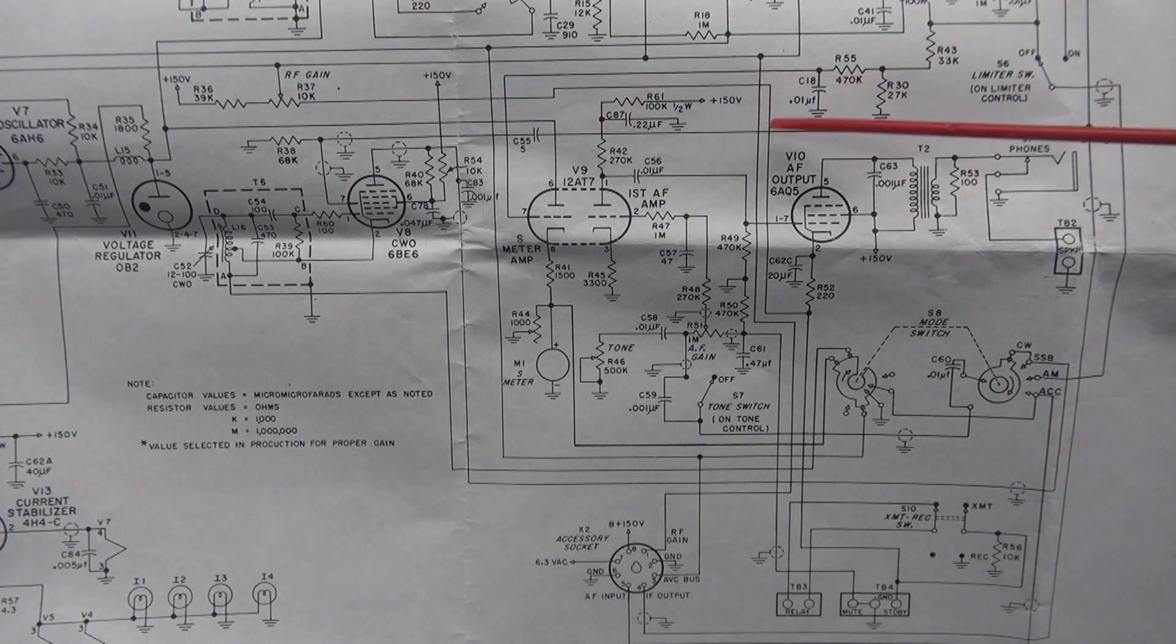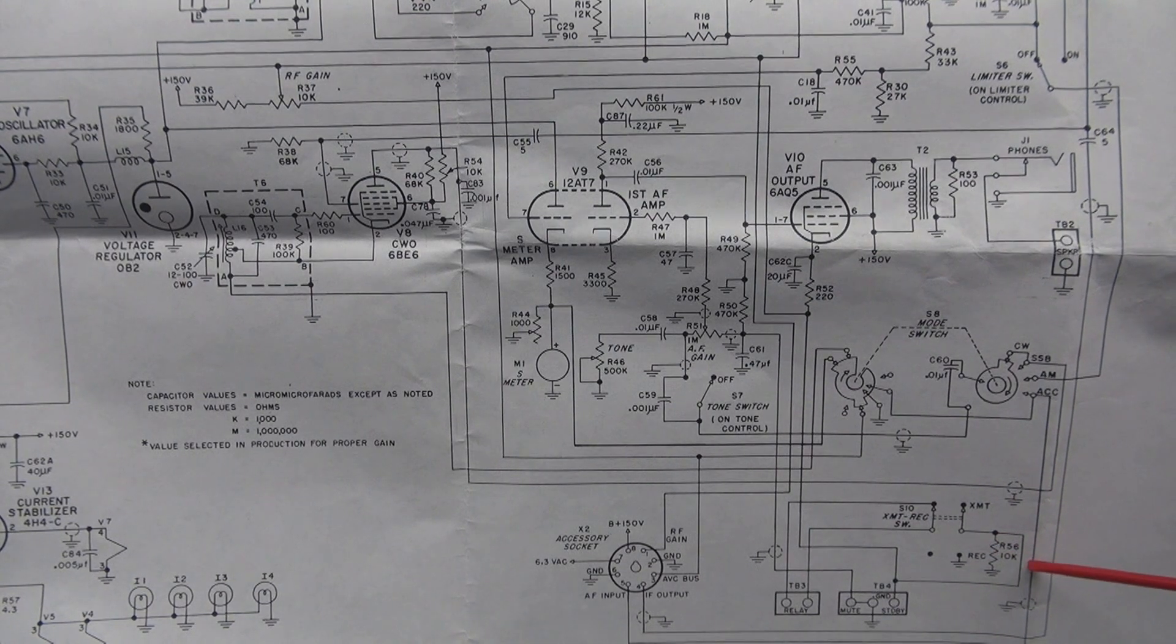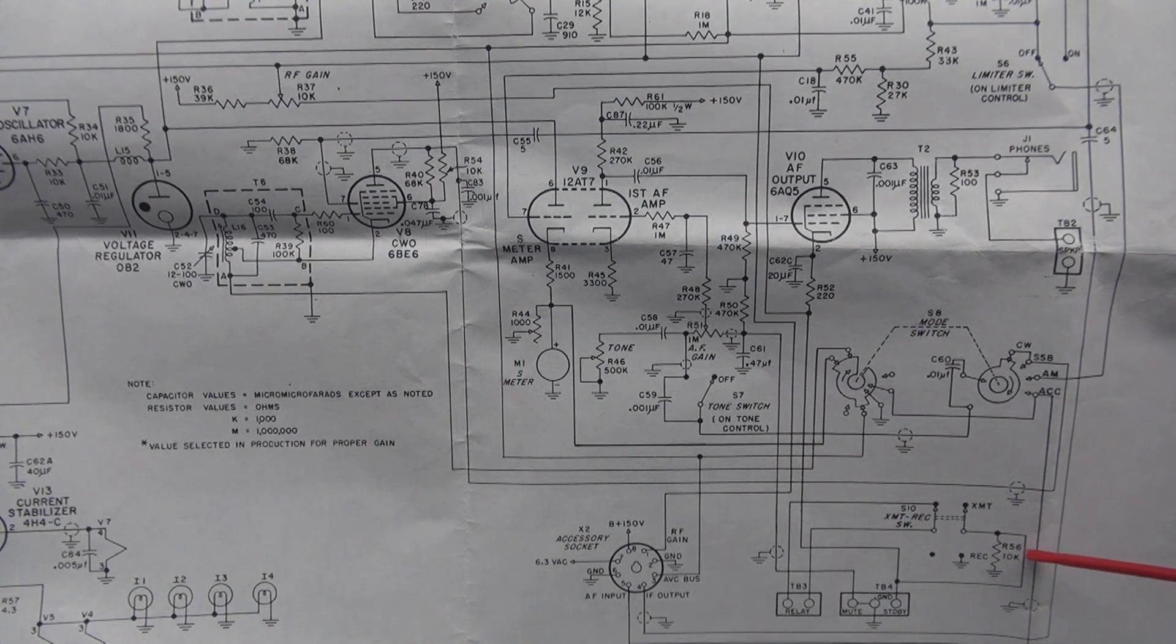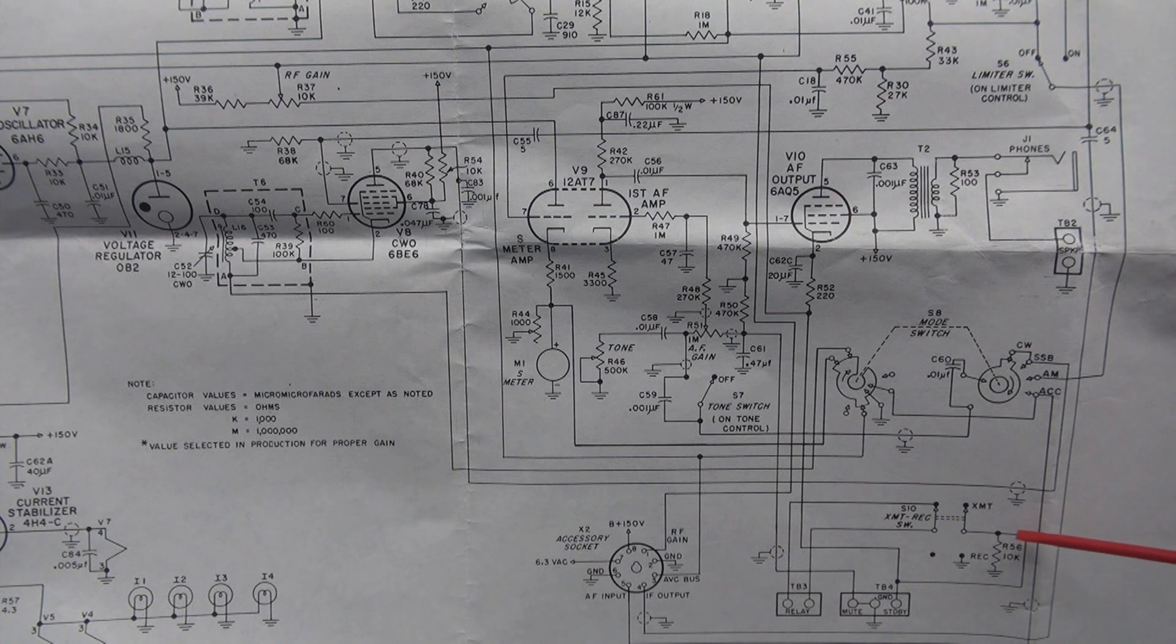So if you follow that line down and around and over here and through that switch, you should see approximately 10k to ground when it's in standby.